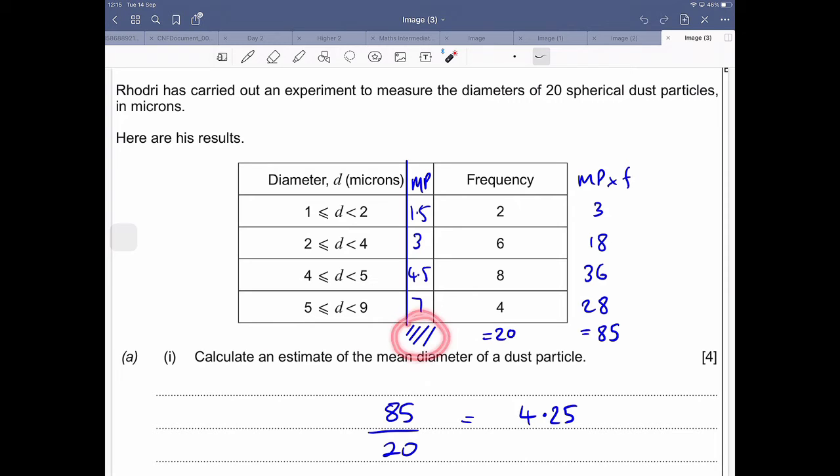But what I particularly like is this bit of shading out here. The reason why I like that is one of the main misconceptions when people complete these type of questions is they add up this midpoint column, which you shouldn't ever do. You never do that.